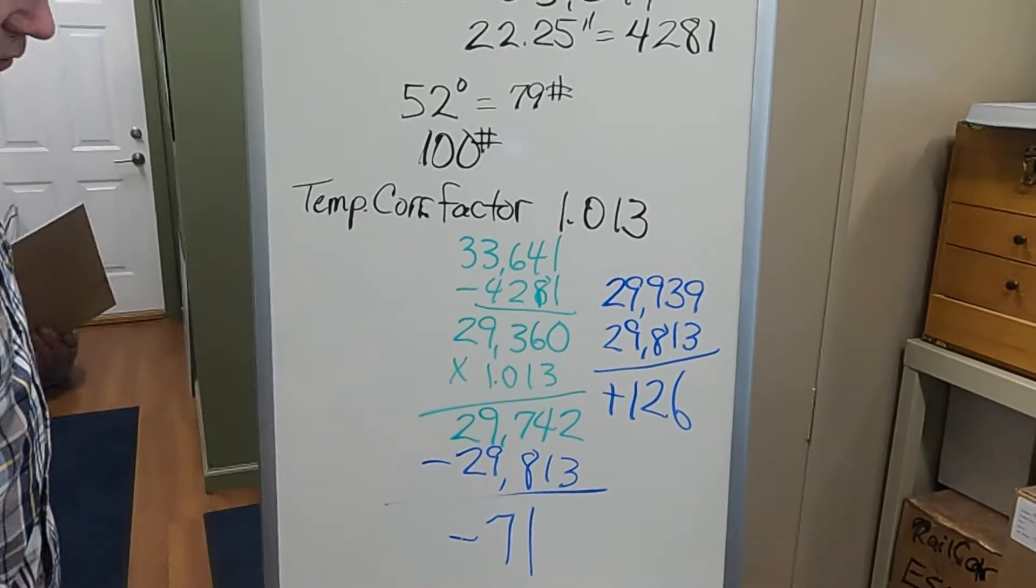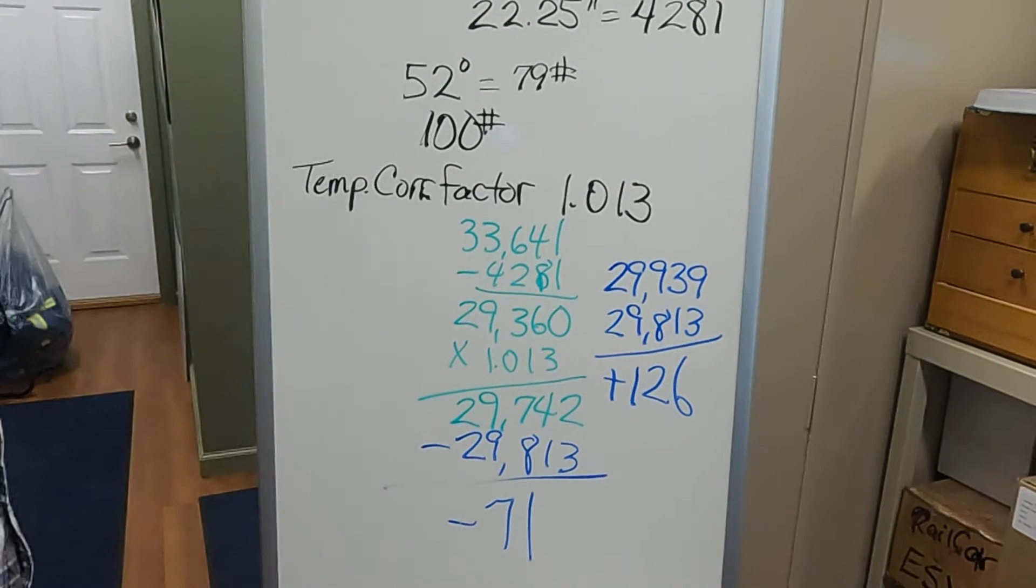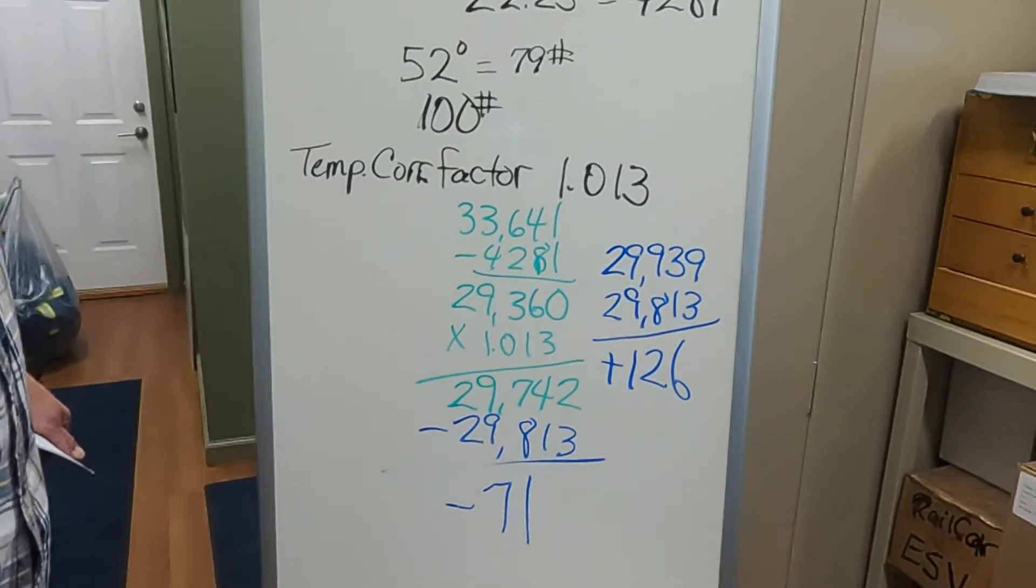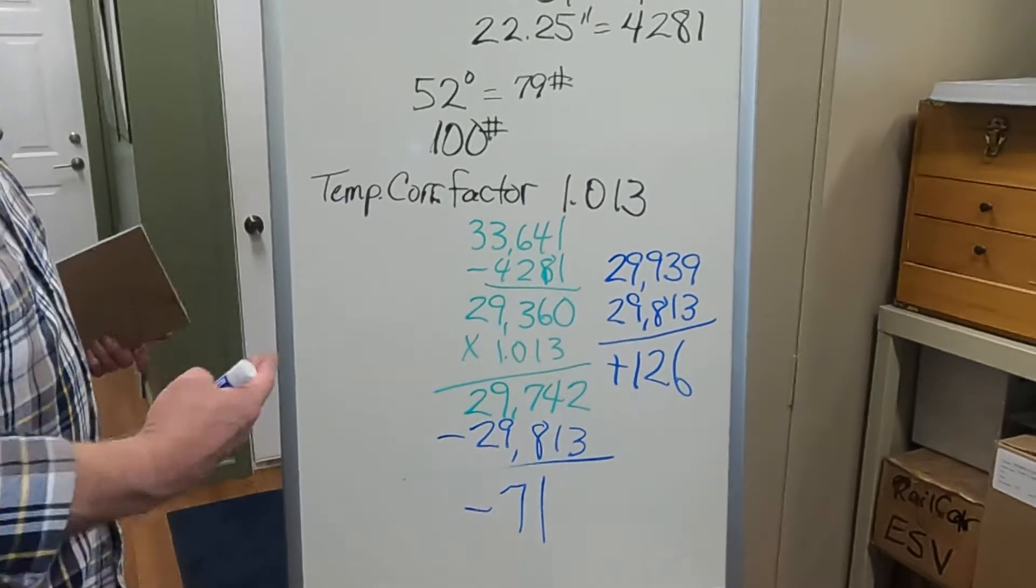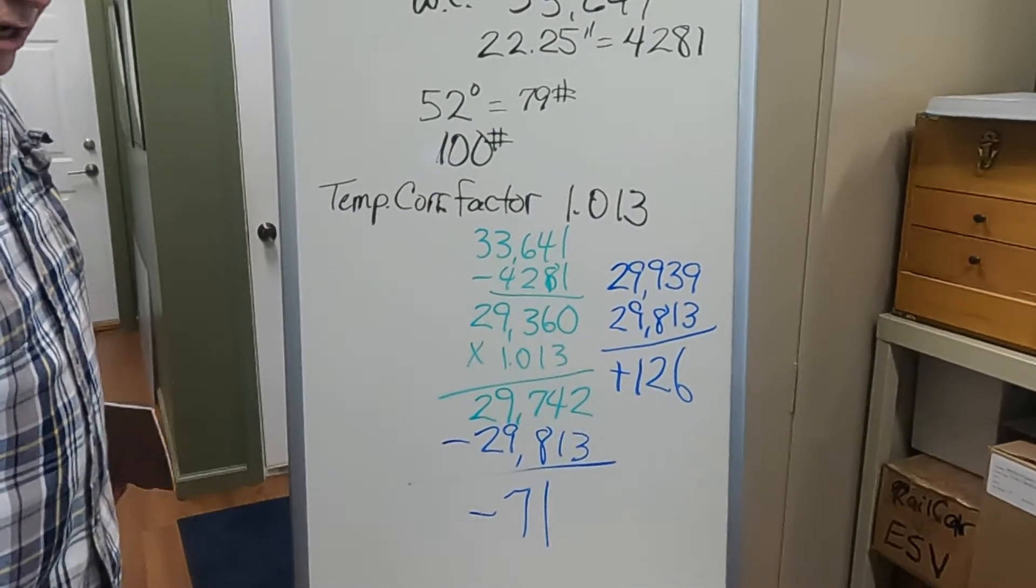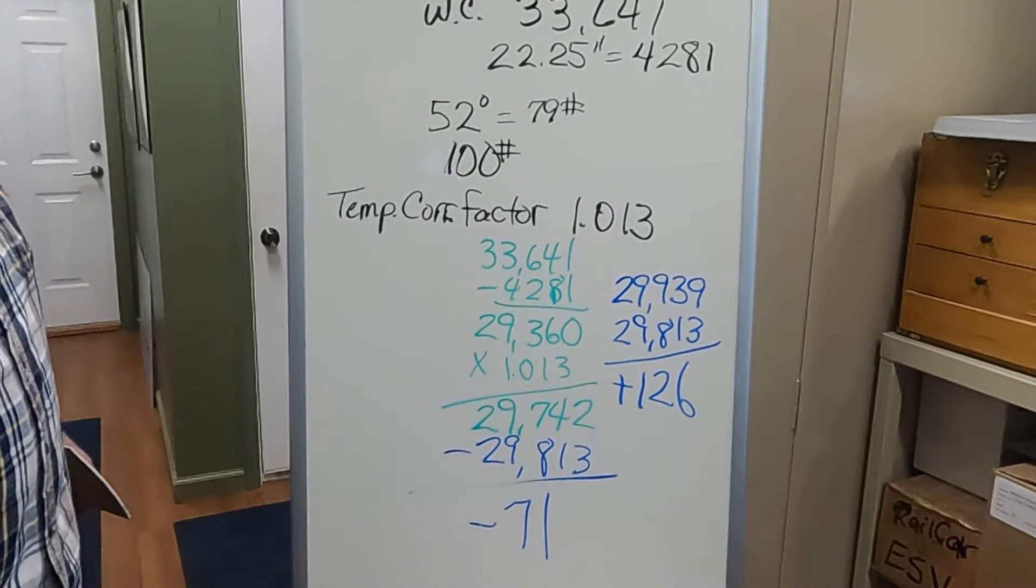But I strongly suggest that you always do a basic rail car calculation so that you know. Because if you're off, you know, it's nothing to be off 300 gallons at a time. If you're consistently off 300 gallons at a time, you do 10 cars, and each car is off 300 gallons, you're now 3,000 gallons off.